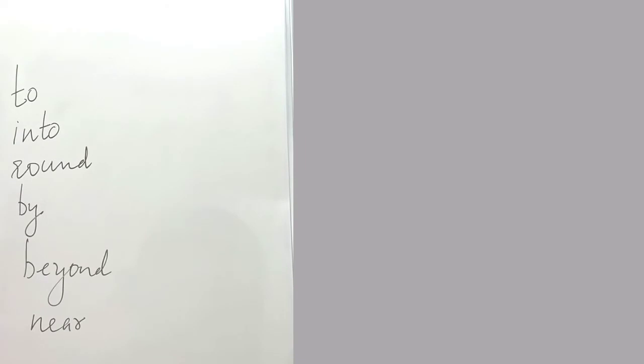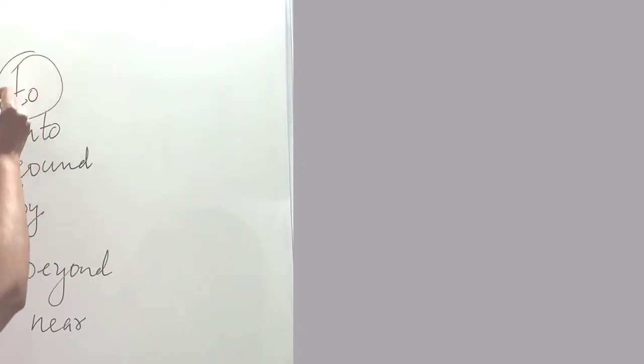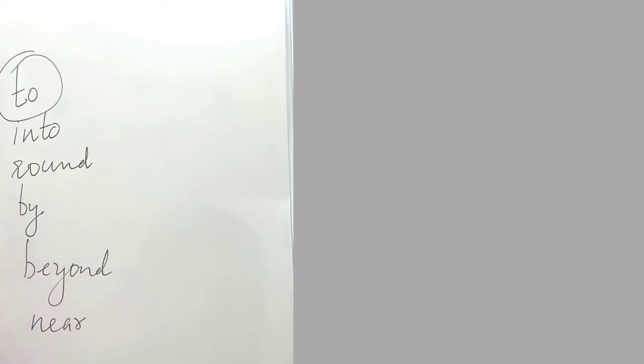Look at the sentences. The path to the river dropped steeply. Which word shows the relation between the path and the river? The word 'to'. Words like to, into, round, by, beyond, near — these words are called prepositions.